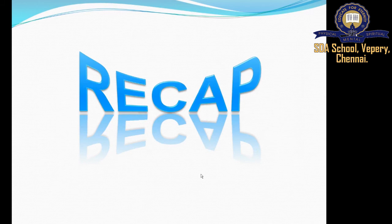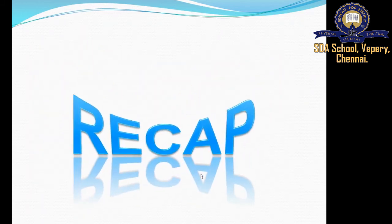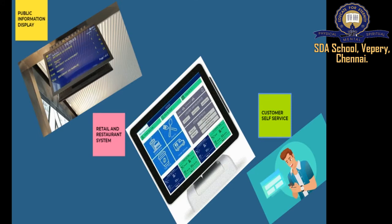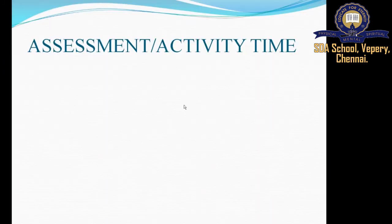For a quick recap: the three places where touch screens are used are public information display, retail and restaurant systems, and customer self-service. Examples include ATM and ticket machines for self-service, and cash registers, order stations, and seating arrangements for retail and restaurant systems.